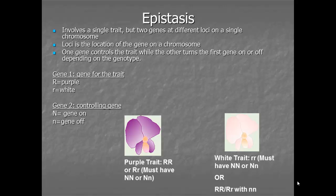Epistasis is a single trait — it's one trait, but it's two genes. Normally, if we have one trait, we have one gene, and if we have two traits, we have two genes. But in this case, we have one trait and two genes at different locations on a chromosome. We call that different loci.